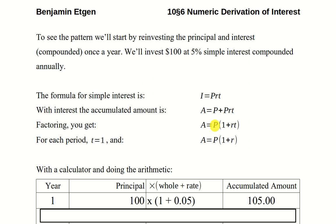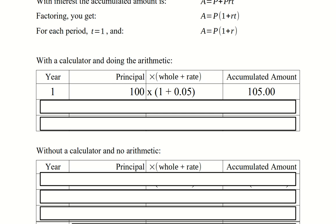Let's look at what happens when we are only looking at one year, or one period. We'll call that T equals 1. When T equals 1, this works out to P times 1 plus R. The 1 means we're getting all of the principle back, and the R means we're getting the interest back as well. We're going to work through this in an entirely numeric way and gradually work towards the equation.